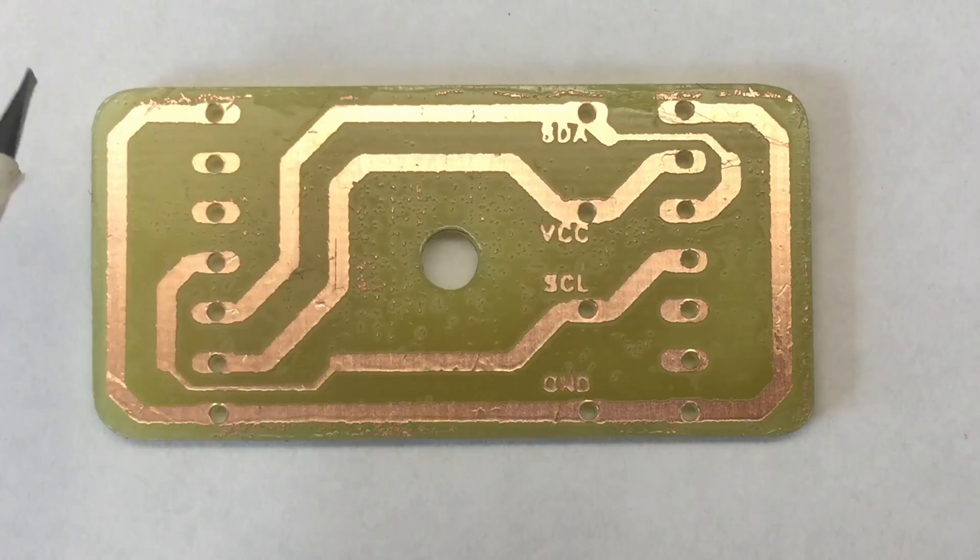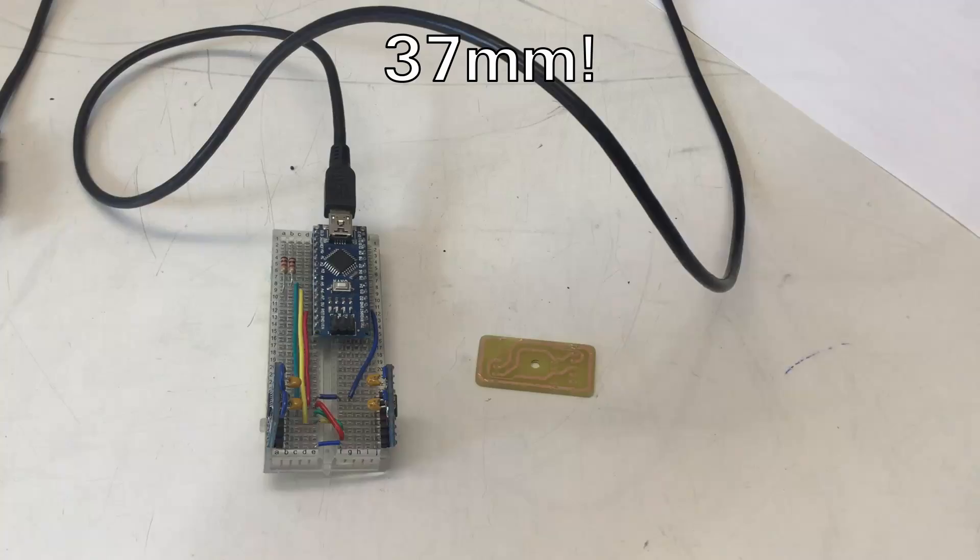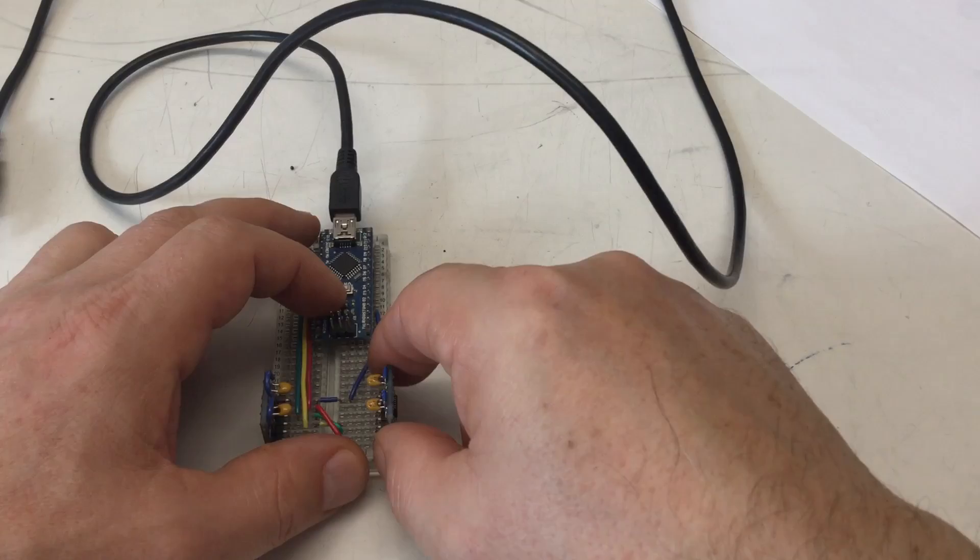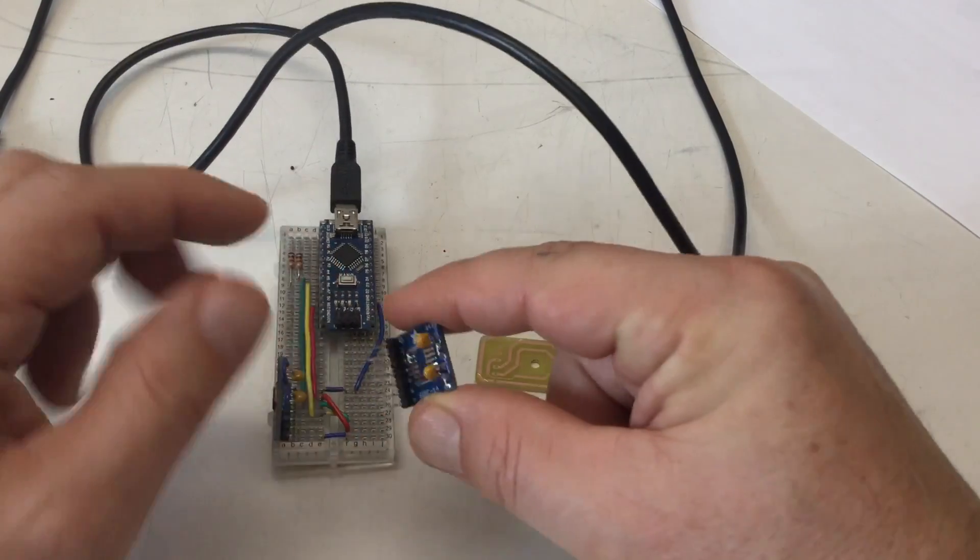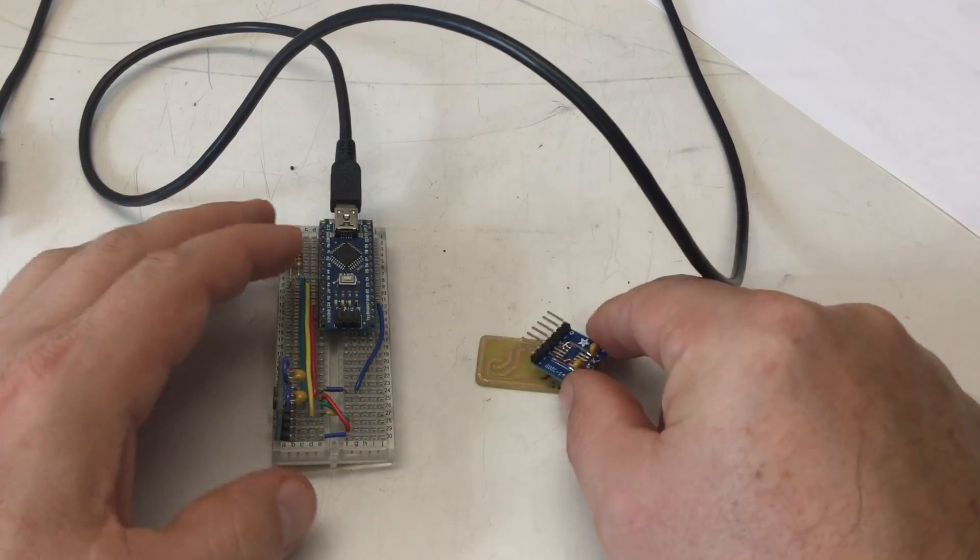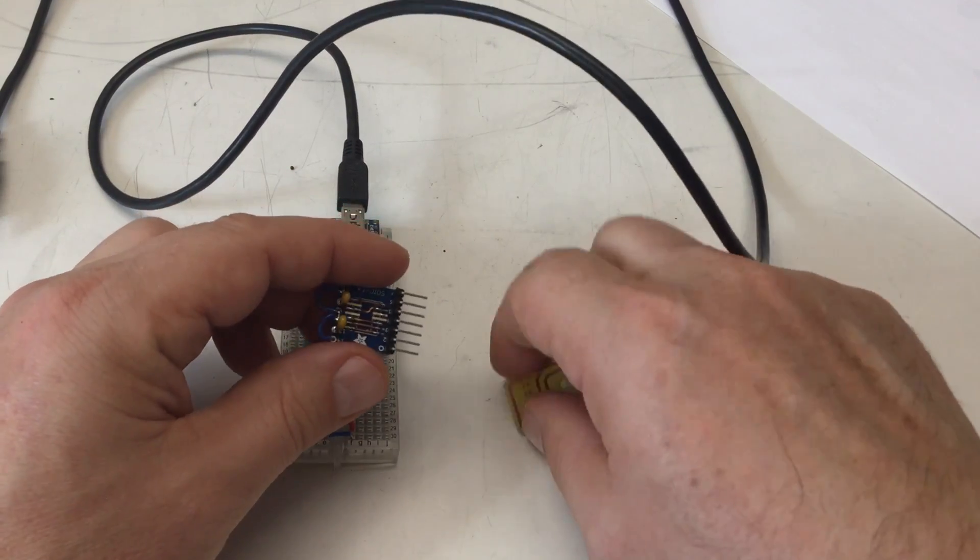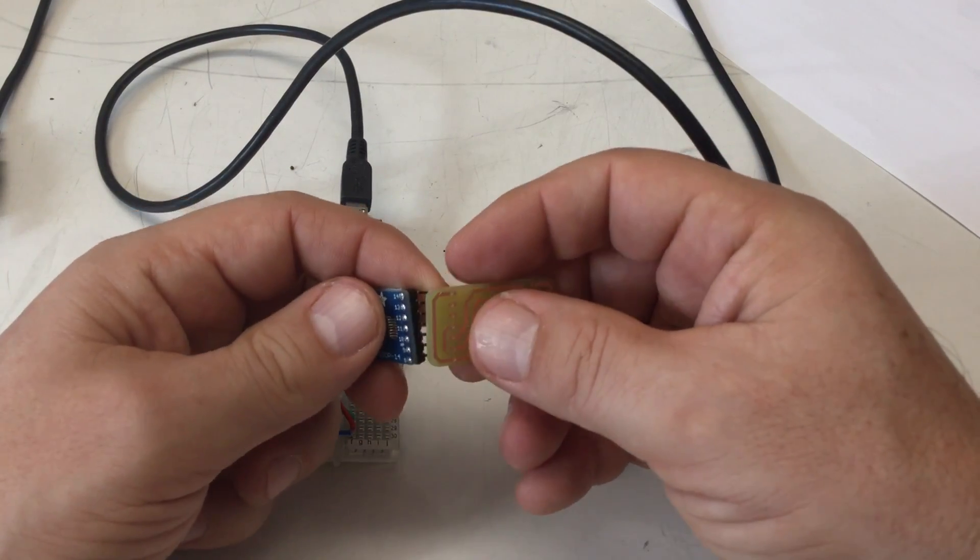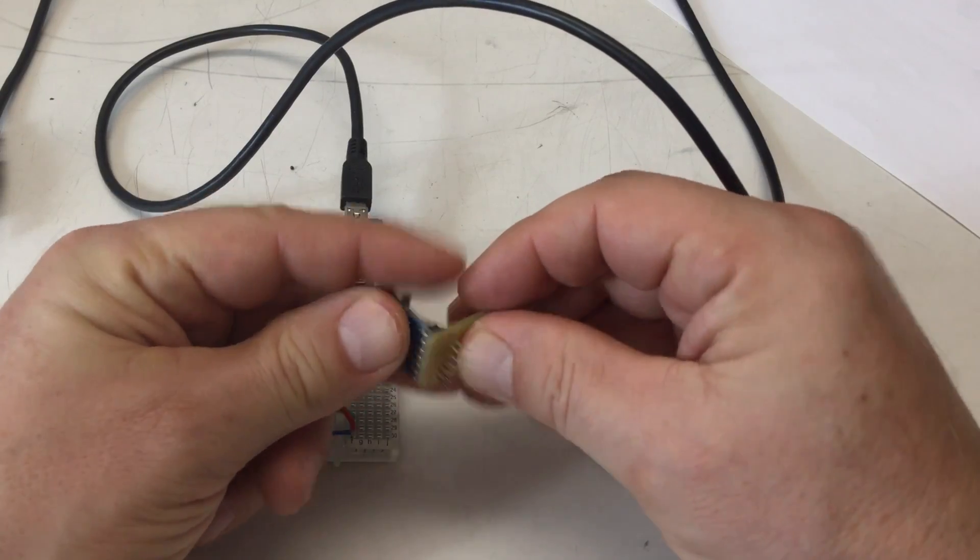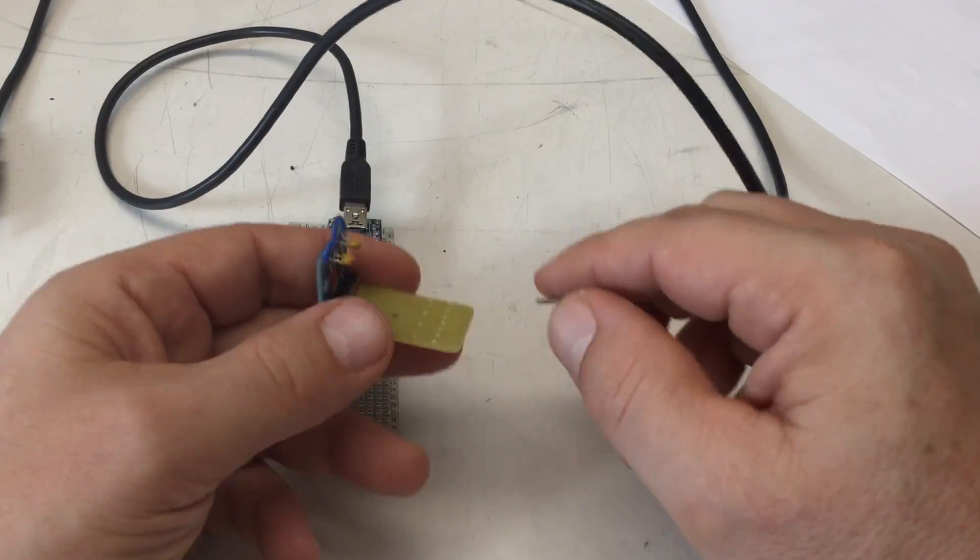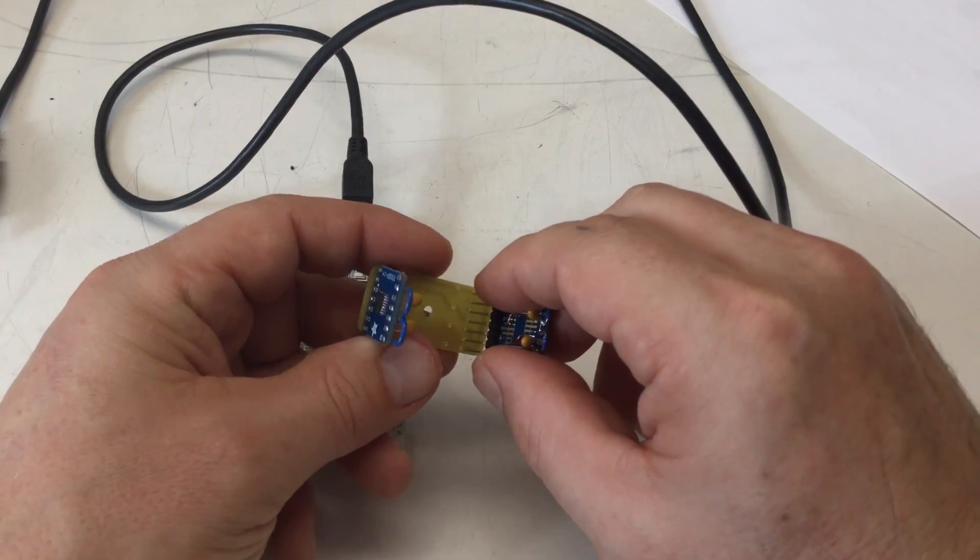I will take off now my breakout boards with the Hall effect angle sensors off my breadboard and solder them in here. I'll do that off camera because soldering is quite boring, and then I'll come back to you.